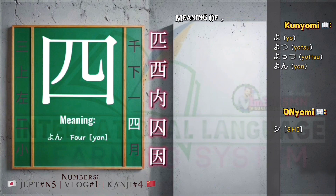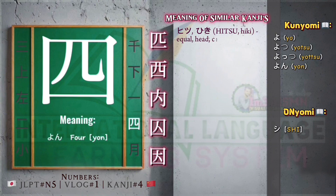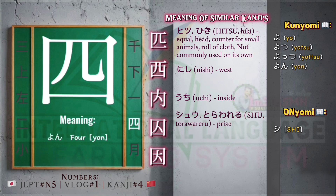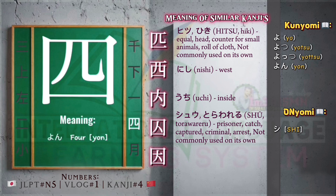Meaning of similar kanjis. Tsuhiki — equal, head, counter for small animals, roll of cloth. Not commonly used on its own. Nishi — west. Uchi — inside. Shuu, torawareru — prisoner, catch, captured, criminal, arrest. Not commonly used on its own. In — cause, factor.